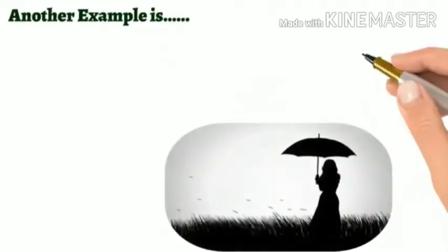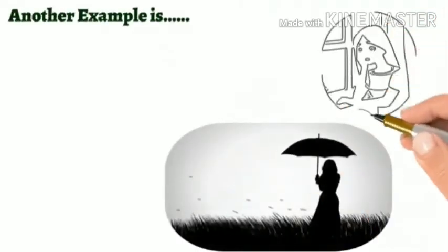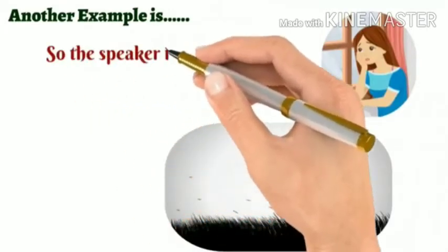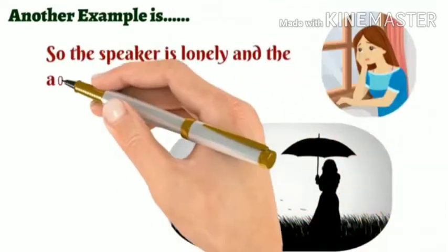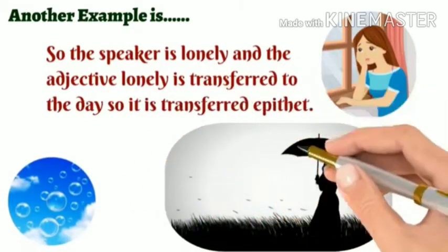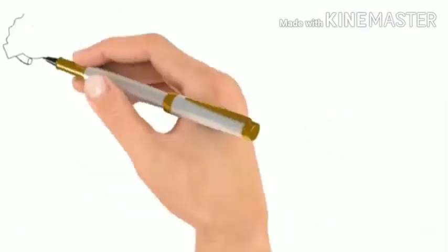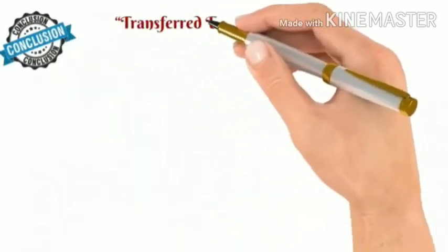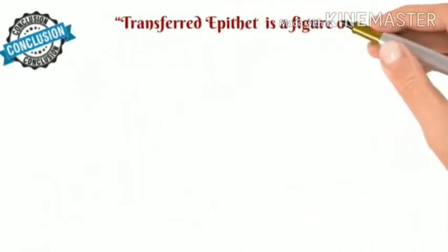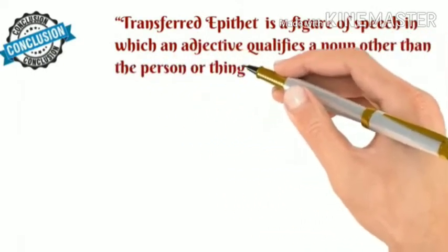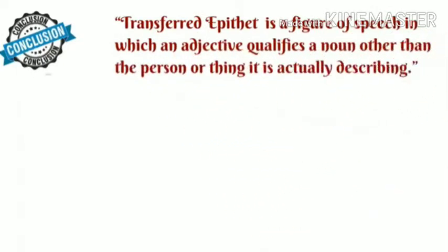Another example is 'Lonely Day.' Here basically the speaker is without any companion throughout the day, so the speaker is lonely and the adjective 'lonely' is transferred to the day — so it is transferred epithet. Transferred epithet is a figure of speech in which an adjective qualifies a noun other than the person or thing it is actually describing.